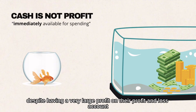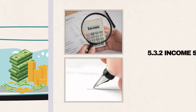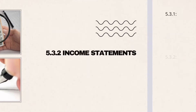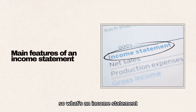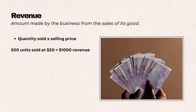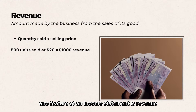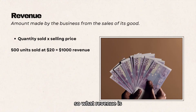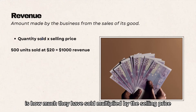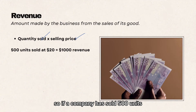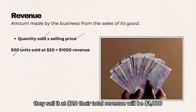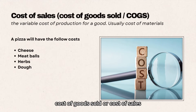What is an income statement? One feature is revenue — revenue is how much they have sold multiplied by the selling price. For example, if a company has sold 500 units at $20 each, their total revenue will be $10,000.